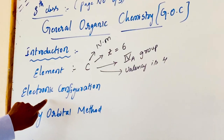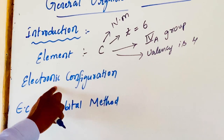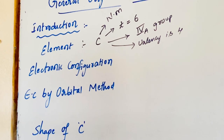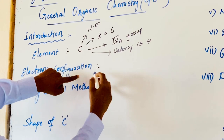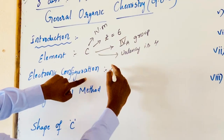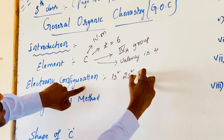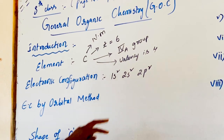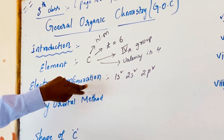Coming to the electronic configuration — the filling of electrons into the available orbitals. The number of electrons available is 6. The configuration is 1s2, 2s2, 2p2. In the valency shell, the total number of electrons is 4.